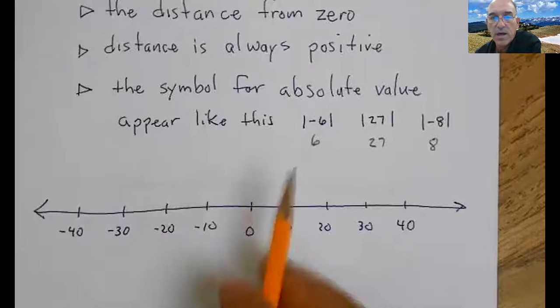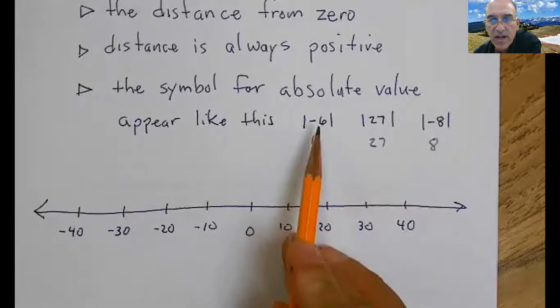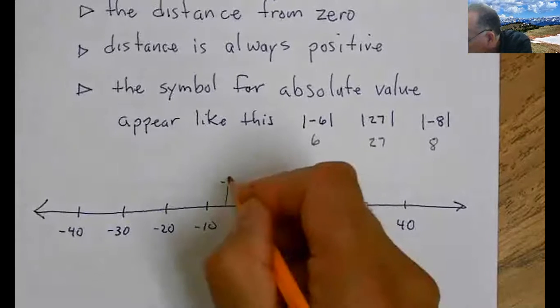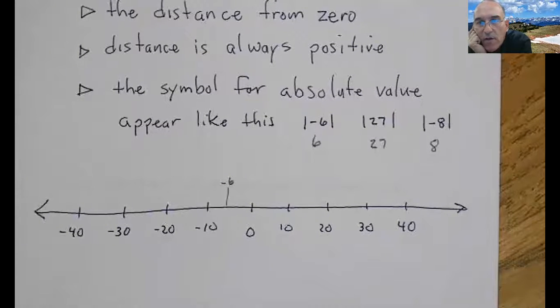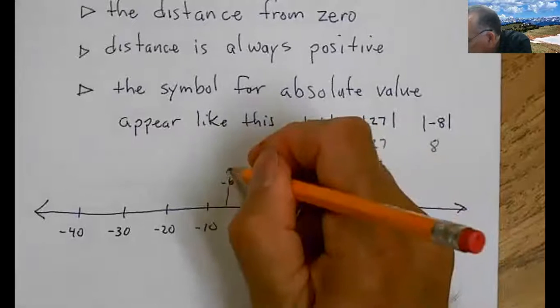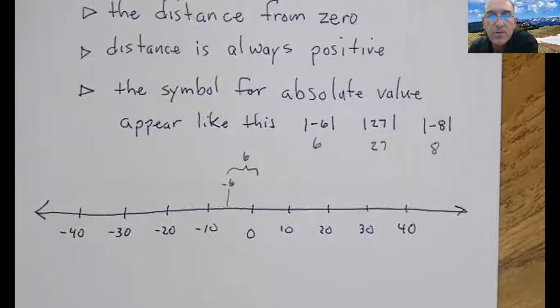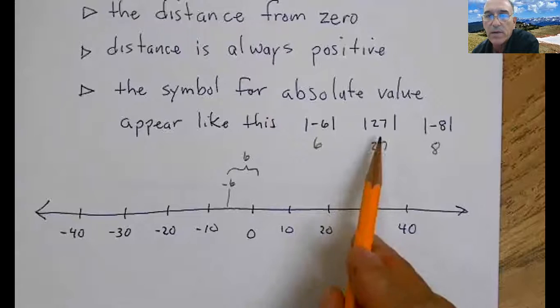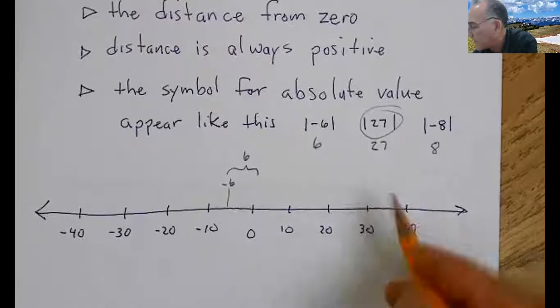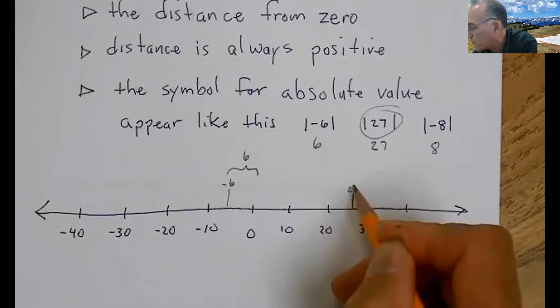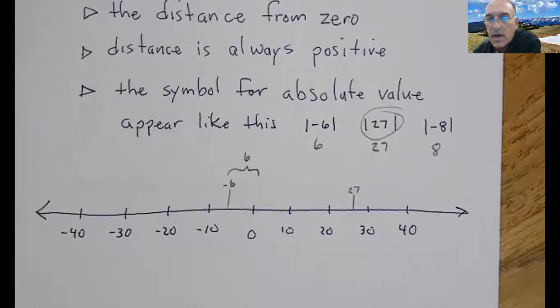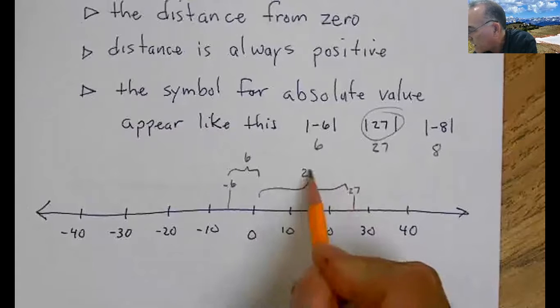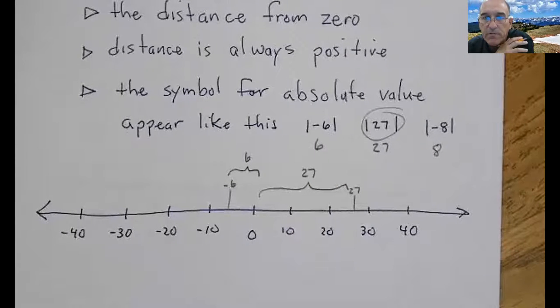So if I were to put these on the number line, let's take the six. The absolute value of negative six. Does that appear to be negative six? Negative six would be about right there. How far is it from zero? It is six. It is six units from zero. That's why its absolute value is six. Let's do another one. If I were to take right here the absolute value of 27. About right here? There's 27. How far, how many units is this from zero? I could go like this again. It is 27 units from zero. So its absolute value is 27.